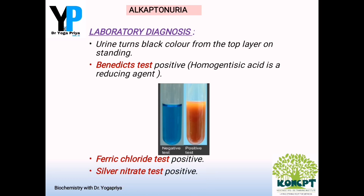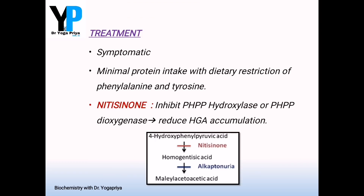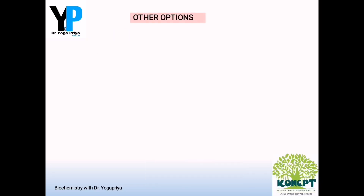Other positive tests include ferric chloride test and silver nitrate test, both of which will be positive in alkaptonuria. Regarding treatment, it is always symptomatic and dietary restriction of phenylalanine and tyrosine is advised because they are precursors for homogentisic acid formation. One important drug is nitisinone, which inhibits the enzyme para-hydroxyphenylpyruvate hydroxylase in order to reduce formation of homogentisic acid by inhibiting the third step enzyme.